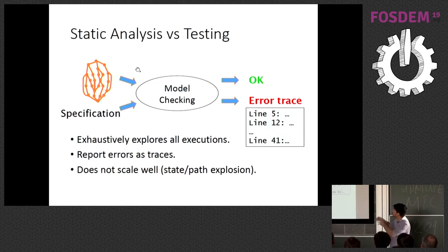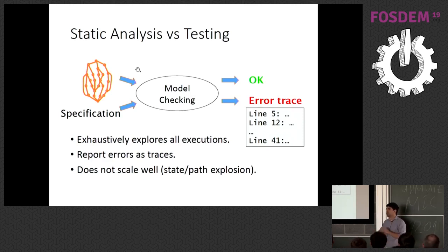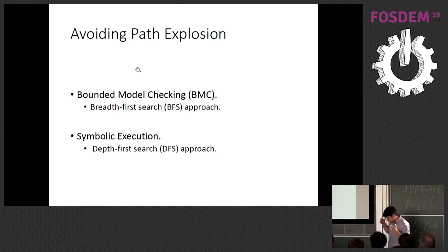With static analysis, we have a specification — for instance an LTL formula — and we actually check the whole state space of the program. Model checking is one kind of static analysis. After the analysis we get either 'no bug' or 'there is a bug, here is a trace.' It explores every single path but doesn't scale because we explore everything.